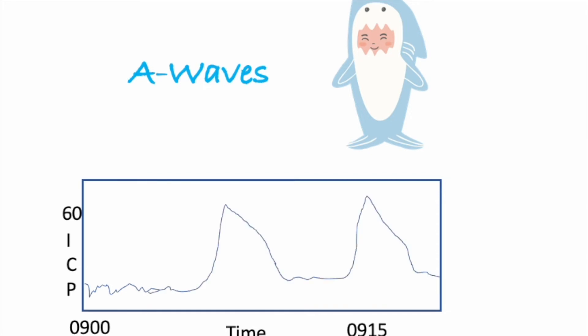You get this huge increase in ICP, like all the way up to 60, and it takes a very long time for that brain to get back to normal ICP levels. So it's a huge spike, and then also over time, the ICP stays very high.